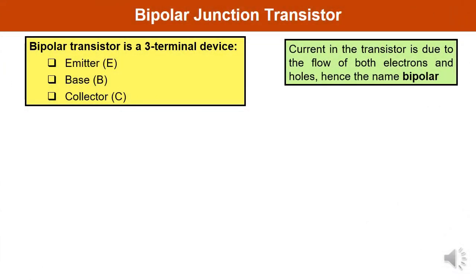A Bipolar Junction Transistor is a three-terminal device. The three terminals are emitter, base, and collector. In the case of the transistor, current is because of the flow of both electrons and holes — that is why its name is Bipolar. Let me tell you once again what is the function of each terminal.